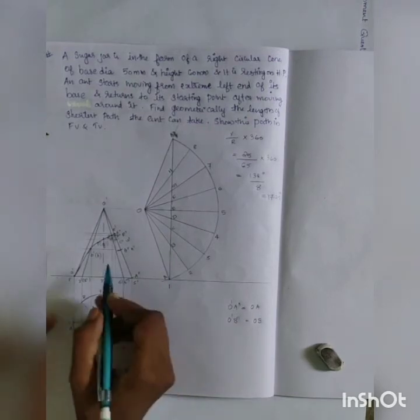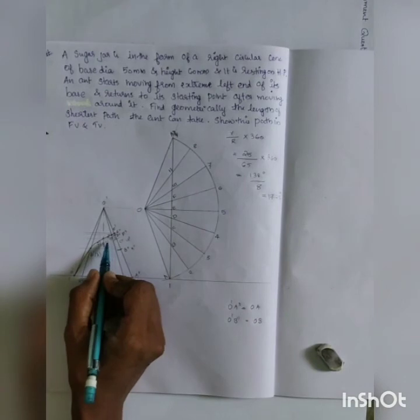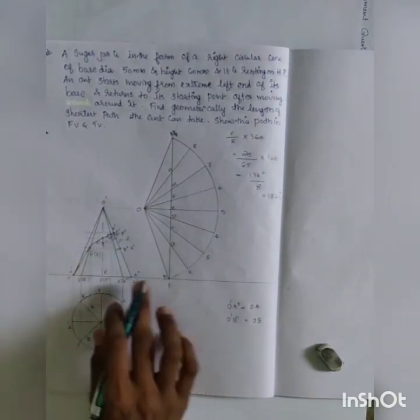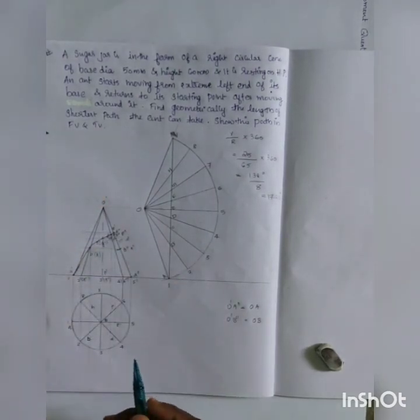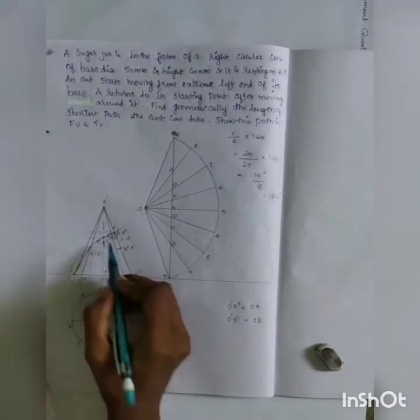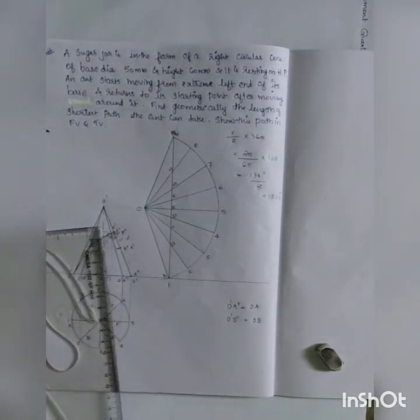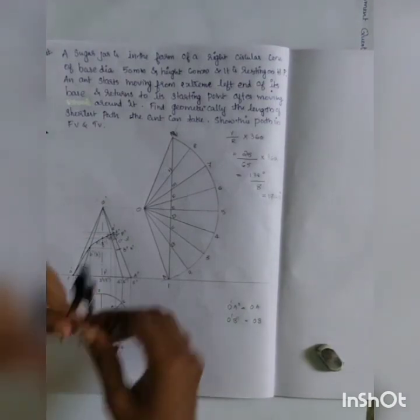C' and G' are in the same axis, so we project them horizontally. O3 and O7 are projected. The points are marked for the top view projection.